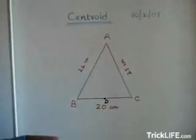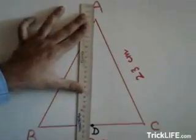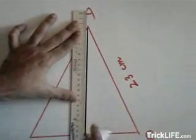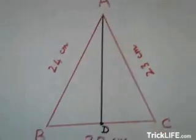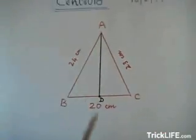This is the midpoint of BC. Now the vertex A and the midpoint of BC are joined with the help of ruler. So this is one of the medians of triangle ABC drawn from vertex A.